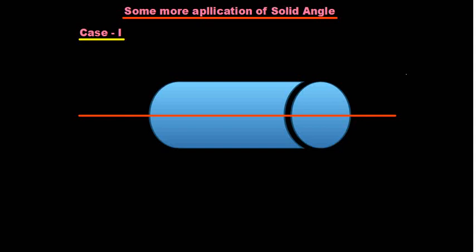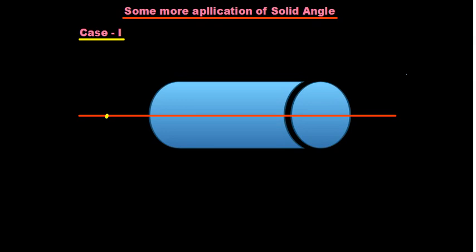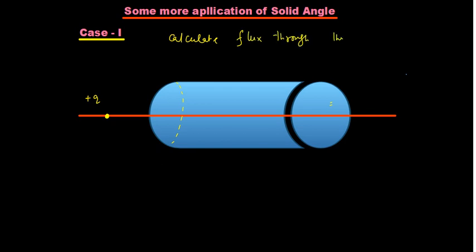In this particular case, let us imagine we have a charge particle outside the cylinder. At this point we have a charge particle — let us say this is plus q — and for this charge I want to calculate the flux through these two flat surfaces: surface one and surface two. So they are asking us to calculate the flux through the flat surfaces.